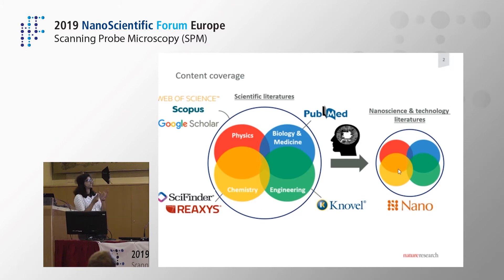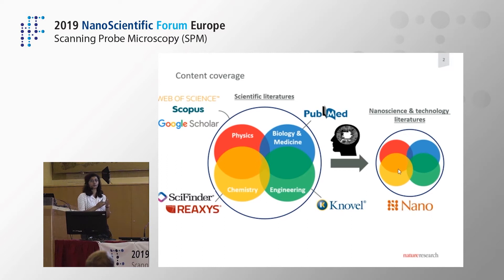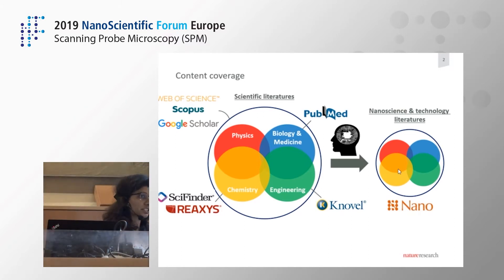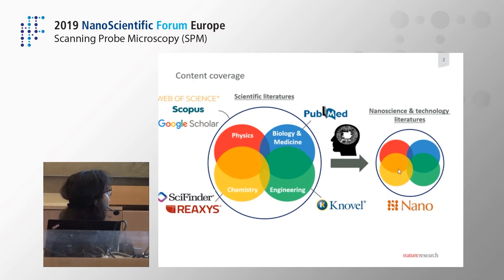However, material science and nanoscience sits at the interface of all these different scientific fields. And a database or repository which collects all the information about nanoscience and technology at this point does not exist. That's where Springer Nature decided to create a repository focused on nanoscience and technology that would cover literature from all different walks of science, as it sits at the interface.